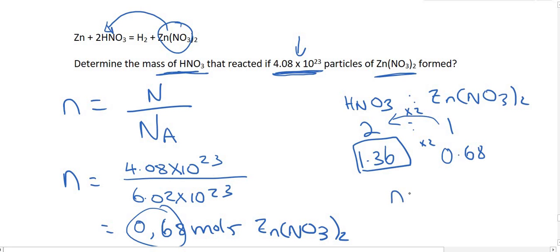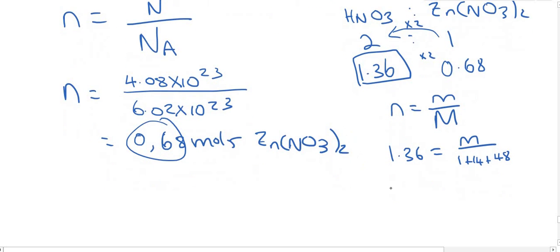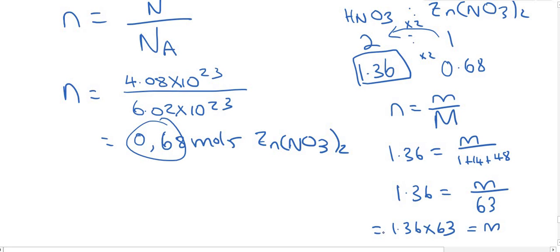Then we convert moles into mass using n = M/Mm. For HNO₃: H is 1, N is 14, and oxygen is 16. The molar mass is 1 + 14 + (3 × 16) = 1 + 14 + 48 = 63. So 1.36 = mass/63, which gives mass = 1.36 × 63 = 85.68 grams.